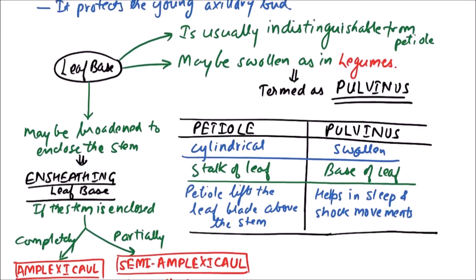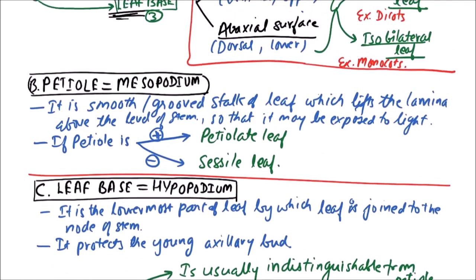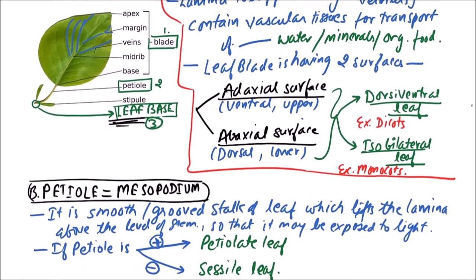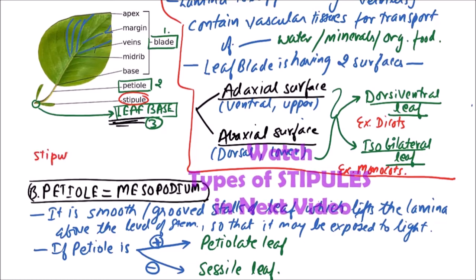Other parts of the leaf are stipules. Stipules are leaf-like paired outgrowths born on either side of the leaf base in many angiosperms. If stipules are present, the leaf is said to be stipulate.